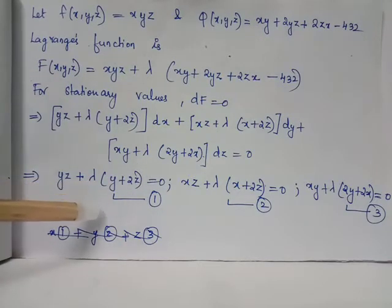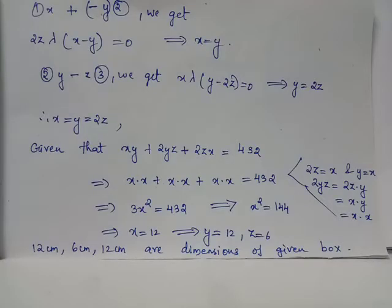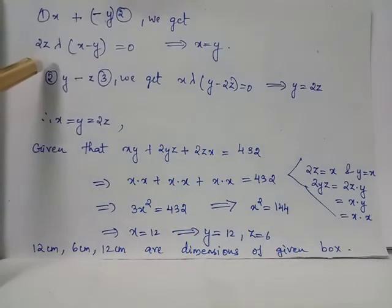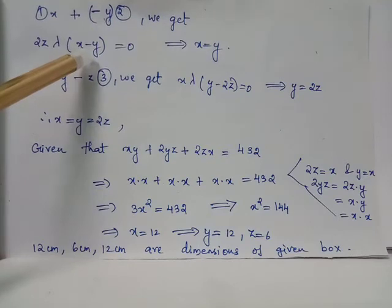We equate all the first order partial derivatives of capital F to 0 to obtain expressions 1, 2 and 3. We multiply equation 1 by x and minus y is multiplied to equation 2. And we sum up the two expressions. We simplify the expression and we get the form 2z lambda into (x minus y) equal to 0 which gives us x equal to y.